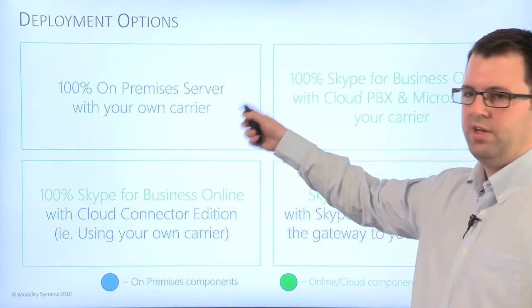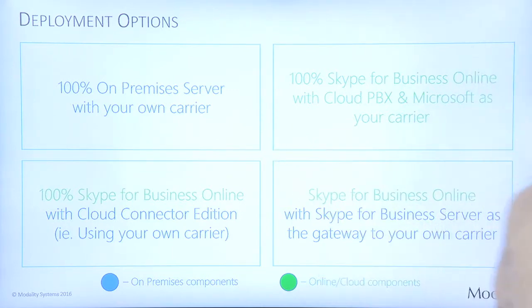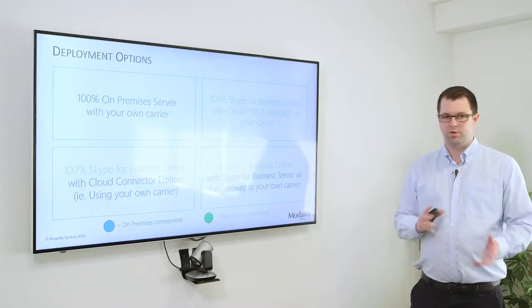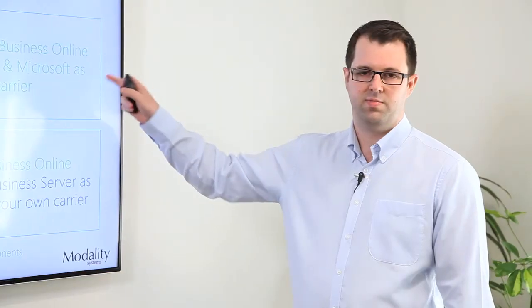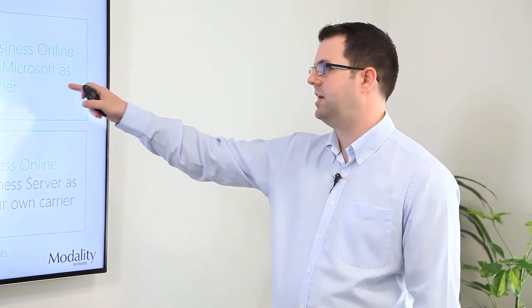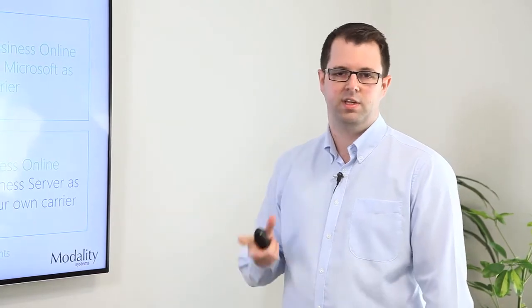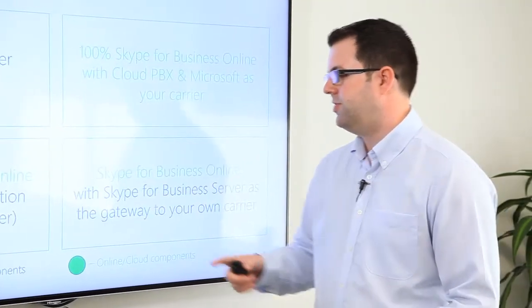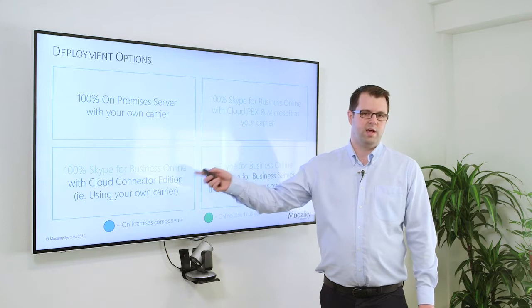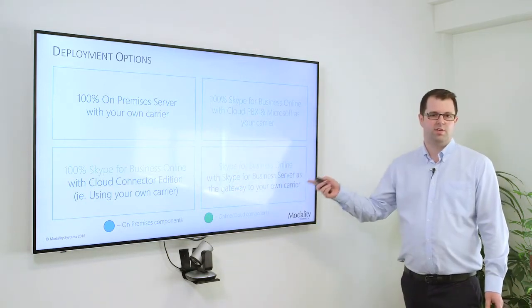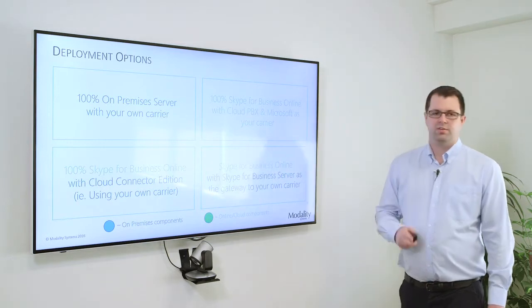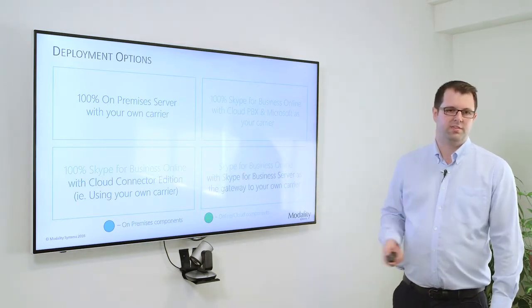First we've got 100% on-premise server — if you've been in the traditional Skype world, that's what you're probably used to. Next we've got the whole new world of Skype for Business Online, where you can have 100% Cloud PBX in Office 365 and have Microsoft as your carrier. We also have two hybrid options: Skype for Business Online with Cloud Connector Edition, and Skype for Business Online alongside server. Today we'll go through those options to understand them.